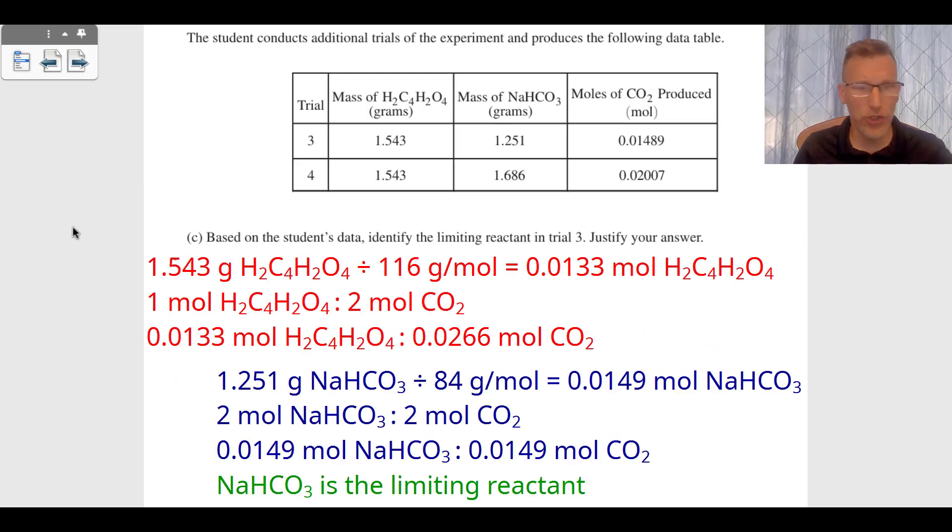Part C: we're trying to find the limiting reactant in trial three. You can see they gave us the mass of maleic acid, the mass of sodium bicarbonate, and the moles that we produced. There are a couple different ways to do this problem, but let's start with 1.543 grams of maleic acid. We divide by its molar mass of 116.